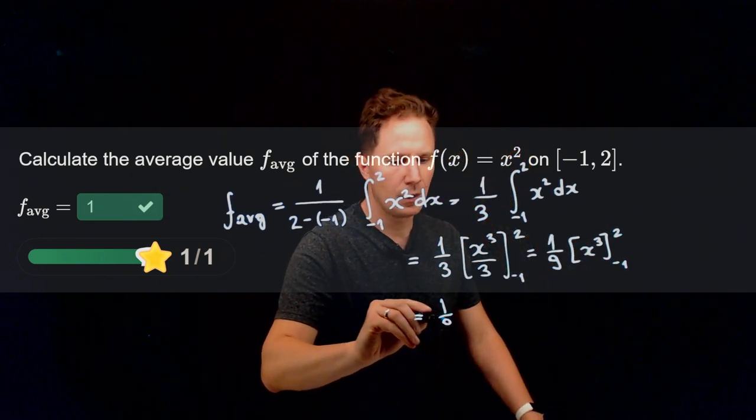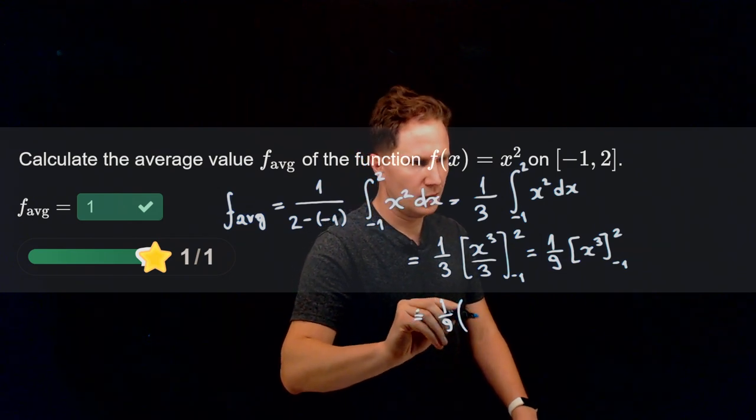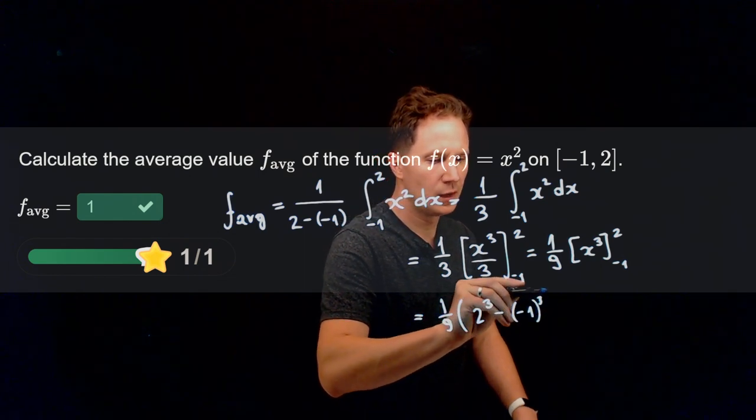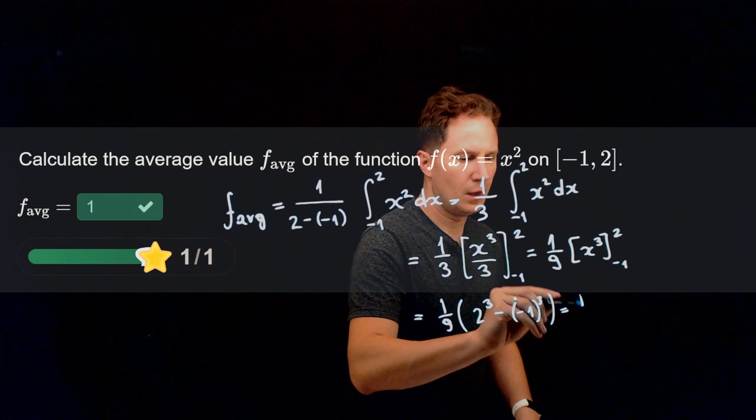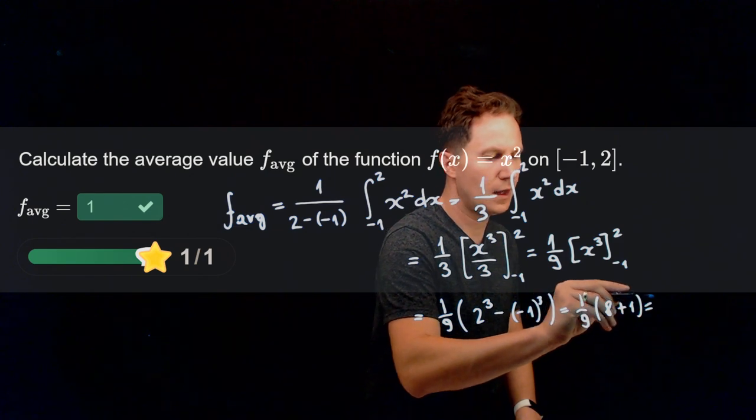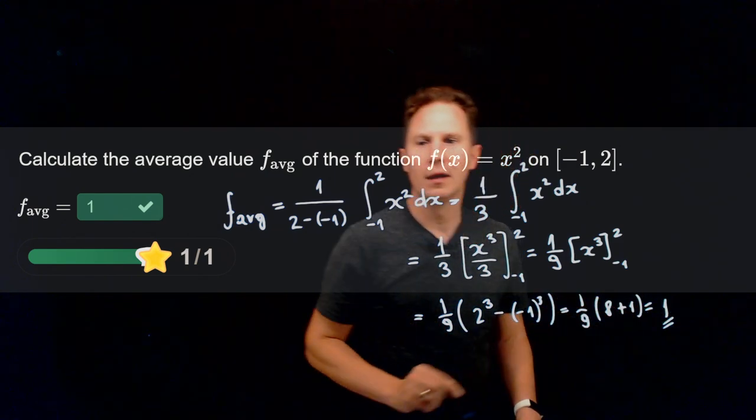I get a ninth times 2 cubed minus minus 1 cubed, and that is a ninth times 8 plus 1, that is 9. 9 over 9 gives us 1. Let's look at the next question.